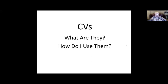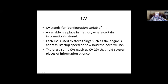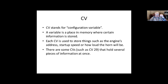The topic for today is CVs — what are they and how do we use them? I'm not going to go into the details of programming. CV stands for configuration variable. In the computer world, a variable is a place in memory where information is stored, and a CV configuration is used to store things such as the engine's address, startup speed, how loud the horn will be, acceleration, deceleration, and things like that. Some CVs, such as CV 29, hold several pieces of information at once, which I'll briefly talk about in a few minutes.